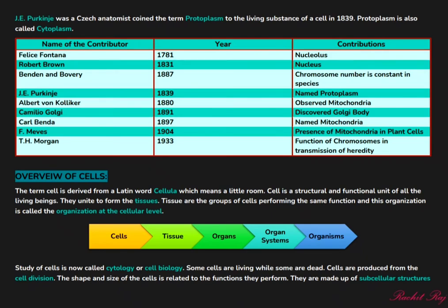These were very important scientists and their observations, but the journey did not stop here. There are many more important names, which you can see in the table along with their contributions. Let's now have a detailed overview on cells. The word 'cell' is derived from the Latin word 'cellula,' which means 'a little room.' Cells are the structural and functional unit of living organisms. Similar cells unite to form tissues, which further unite to form organs. Organs combine to form the organ system, and finally a complete organism is prepared.